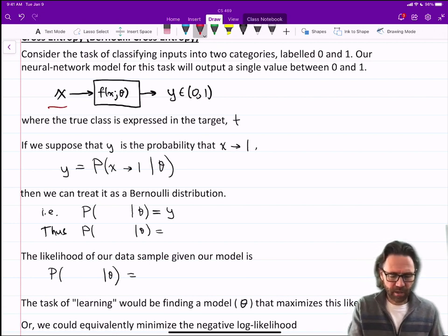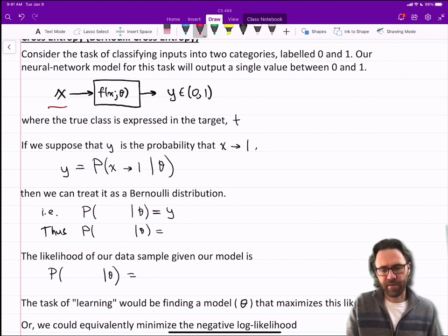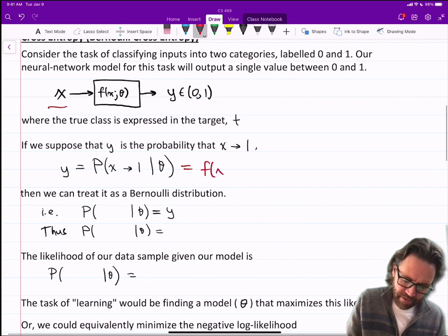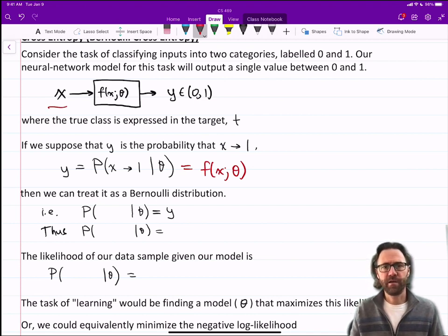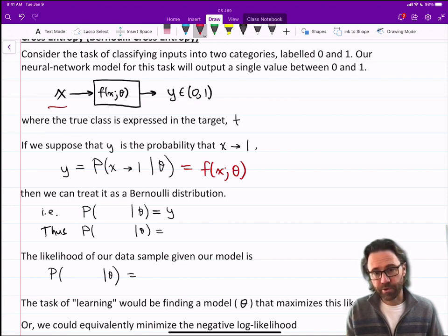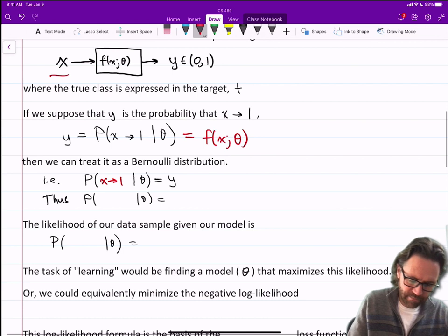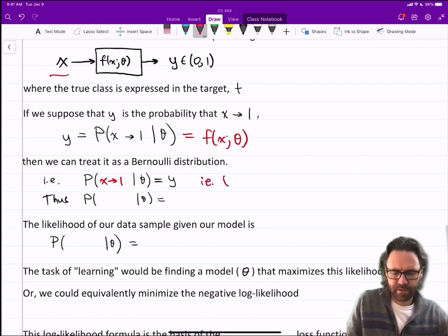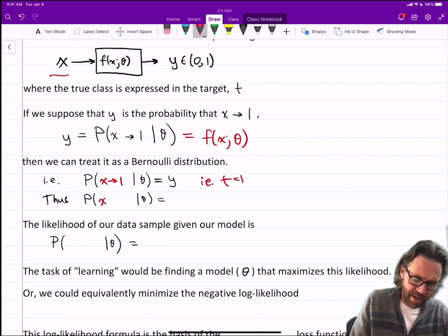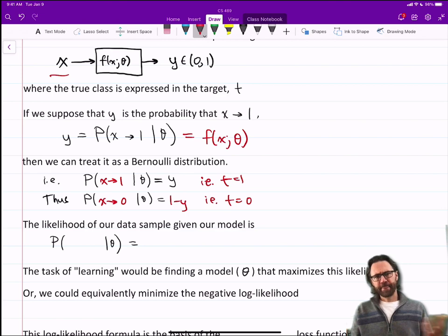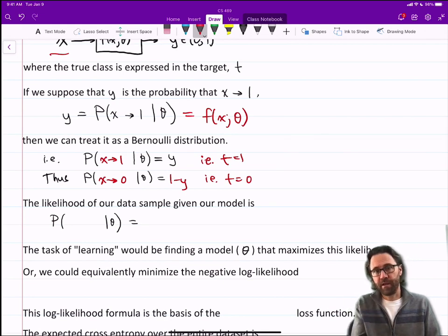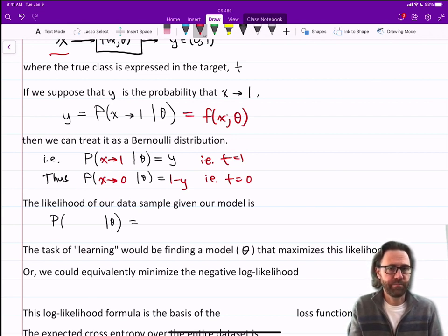If we suppose that y is the probability that x is of class 1, then we could say y equals the probability x is of class 1 given the parameters theta, which is F of x given theta. We can write this as a Bernoulli distribution: probability that x is of class 1 equals y, and probability that x is of class 0 is 1 minus y. We can actually combine those two formulas together.